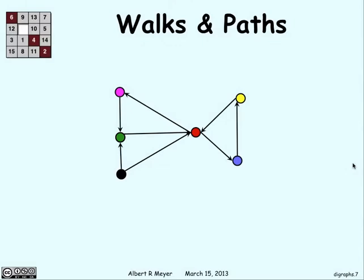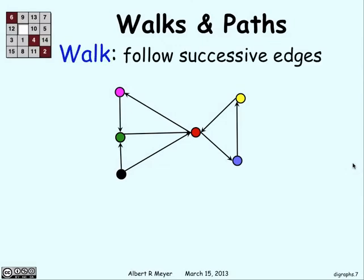So now we're going to define walks and paths. Now, a walk follows successive edges, but it can repeat vertices or edges. For example, let me start at the black vertices you see there, and we can go into red, blue, yellow,